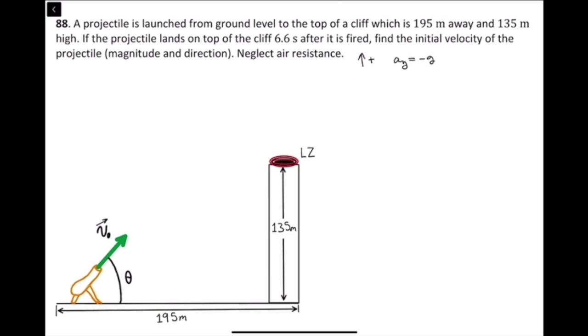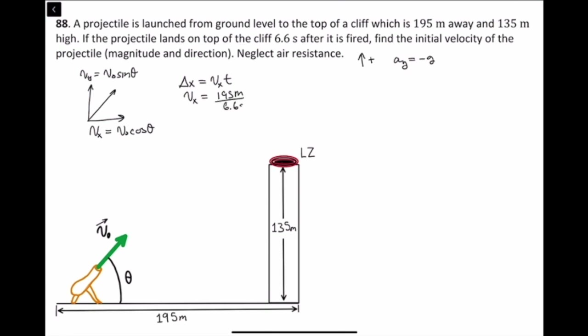To solve for the magnitude of the velocity, we recognize the velocity is at an angle, so it has a y-component and an x-component. Vx equals the initial velocity times cosine theta, and Vy equals the initial velocity times sine theta. To find Vx, we use the displacement in the x-direction: Vx equals 195 meters divided by 6.6 seconds, which gives Vx equal to 29.55 meters per second.